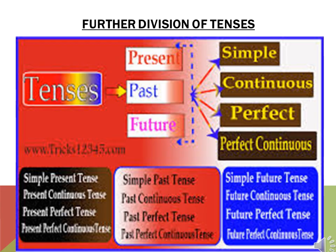Further division of tenses. Here we see in this diagram, tenses are divided into 3 forms — present, past, and future. And again each of them is divided into simple, continuous, perfect, and perfect continuous. Now let us see first the present: simple present tense, then present continuous tense, then present perfect tense, and present perfect continuous tense.